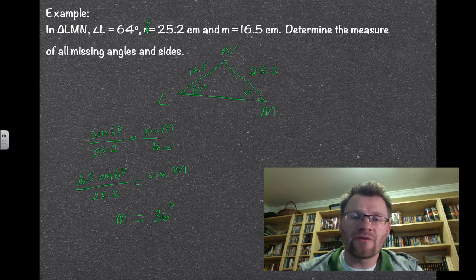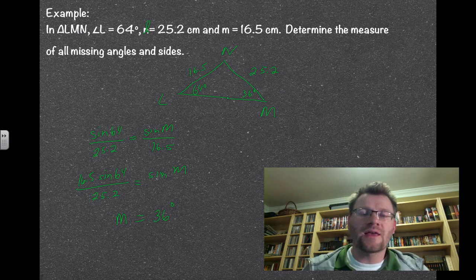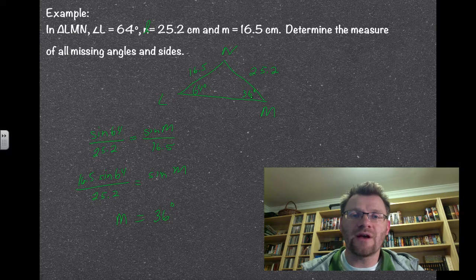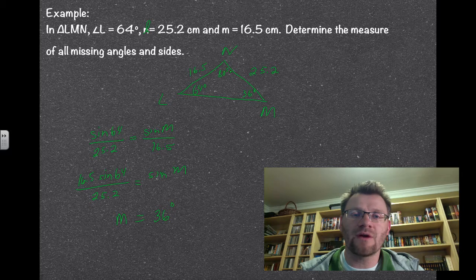So now that I know that m is 36 degrees, I can use these two angles to find the third angle. When you add up 64 and 36, you get 100. And there's 180 degrees in a triangle, so that makes this angle at the top 80 degrees.